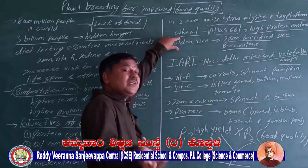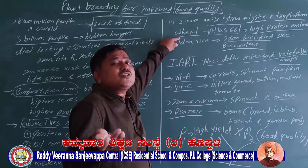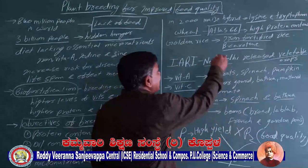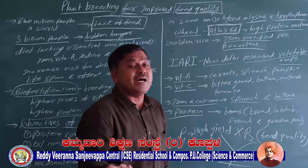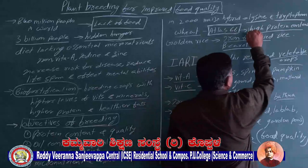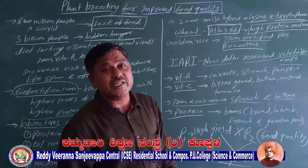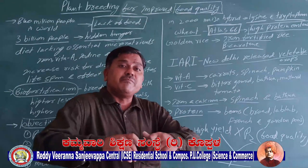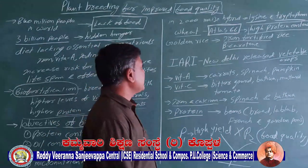Second, for wheat — earlier wheat crop showed less protein content. But the hybrid Atlas 66 was developed, and this Atlas 66 hybrid of wheat shows high protein content. With the help of plant breeding, the wheat plant was made to produce more protein.